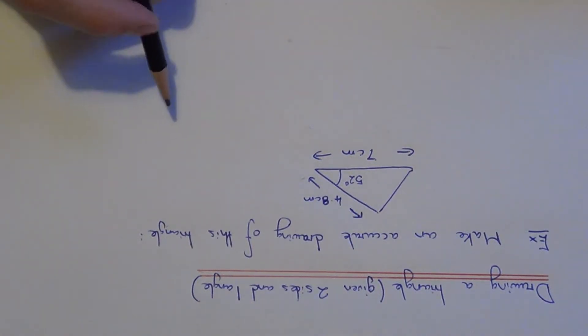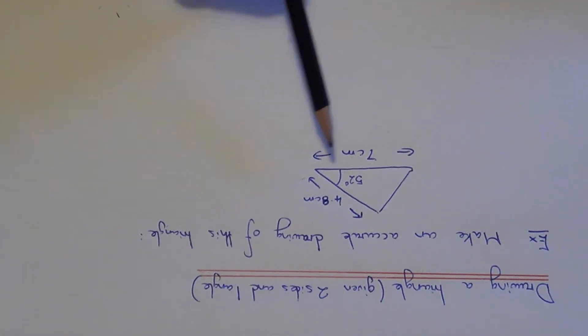Today I am going to show you how to draw accurately a triangle when you are given two side lengths and an angle. To draw this triangle you need to use your ruler and your protractor.